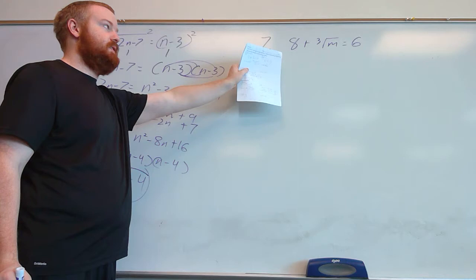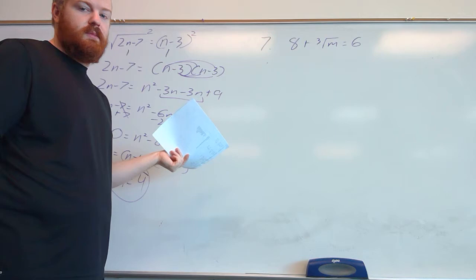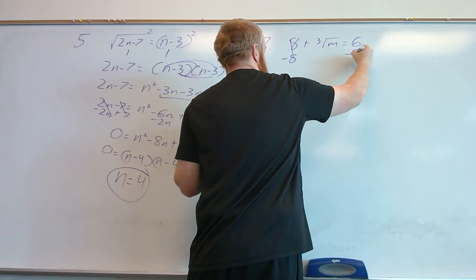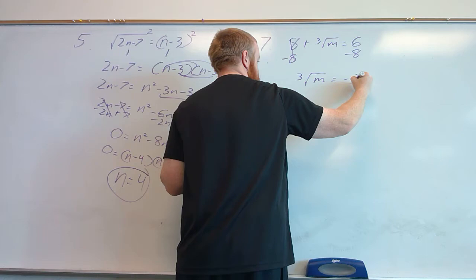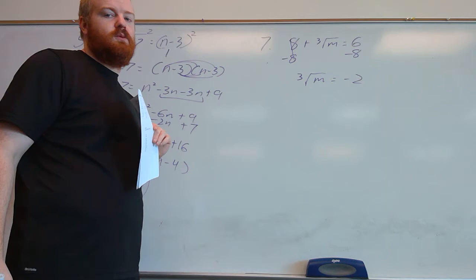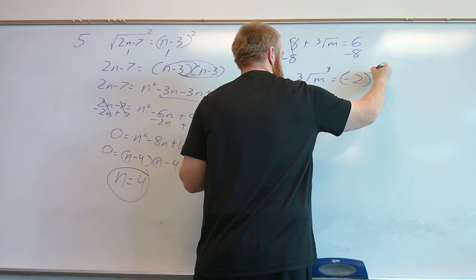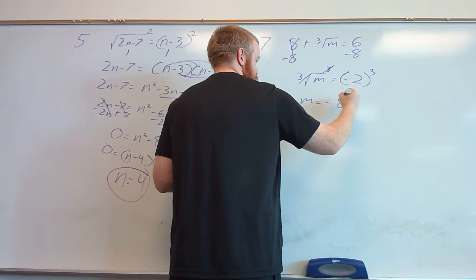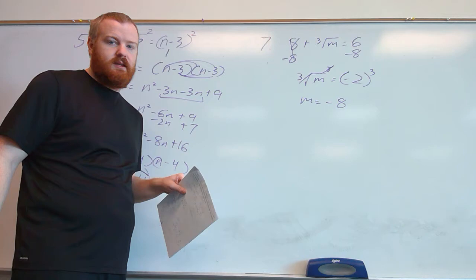For example 7, we have a number added to a cube root, so we need to move it to the other side before getting rid of the radical. Subtracting 8 gives us the cube root of m equals 6 minus 8, which is negative 2. Since this is a cube root, we get rid of it by cubing both sides — raising to the third power — so m equals negative 2 cubed, which is negative 8. Since this was a cube root — an odd-numbered root — we do not have to plug this back in.